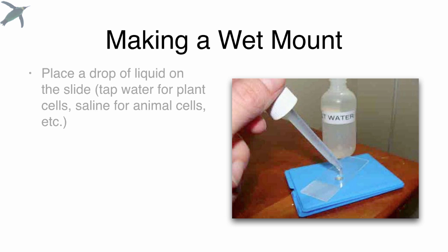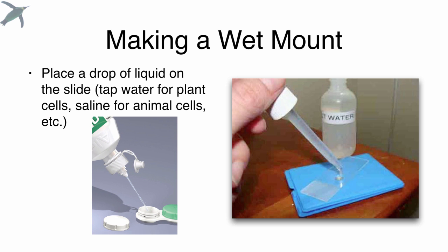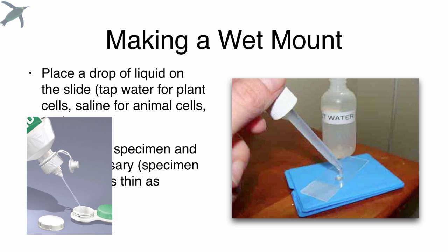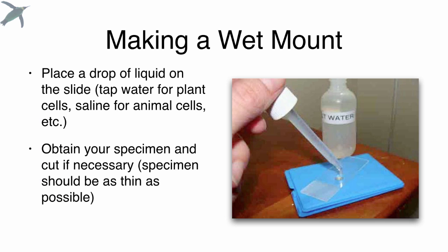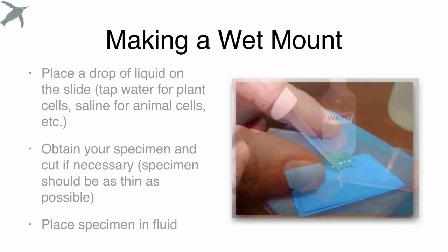You will probably have to make a wet mount. What you're going to do is use a drop of liquid. The liquid you use depends on your specimen. You would be using tap water for plant cells, saline for animal cells. If you don't have saline around, a contact lens solution will work. Get your specimen. If you need to cut it, especially if it's a plant, you want to make that slice as thin as possible, and then just place the specimen in the fluid.